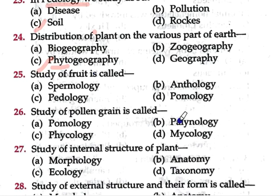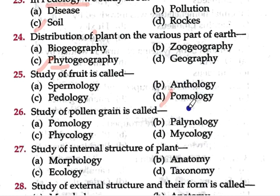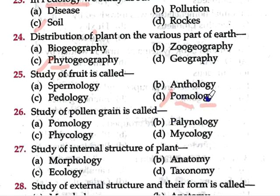Question number 25: Study of fruit is called — option A spermology, option B anthology, option C pedology, option D pomology. The correct answer is option D, pomology. 'Pomo' comes from the Latin word 'pomum', which means fruits. So pomology is the study of fruits, including their cultivation.